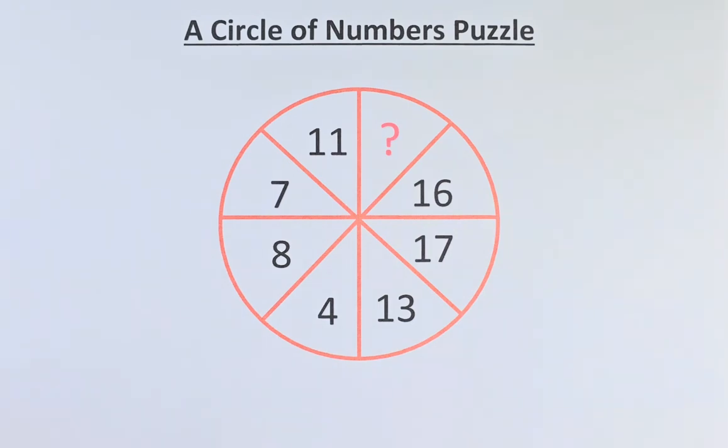Welcome back to this circle of numbers puzzle solution. The numbers are straightforward. It starts with a question mark followed by 16, 17, 13, 4, 8, 7, 11 and a question mark.